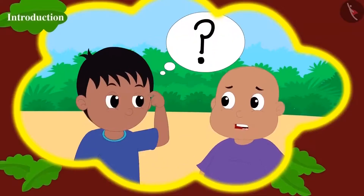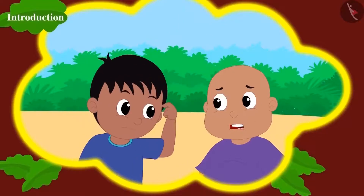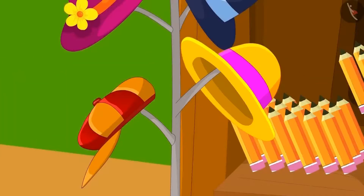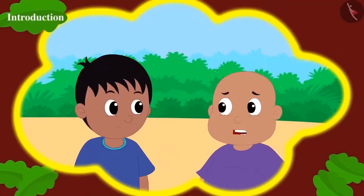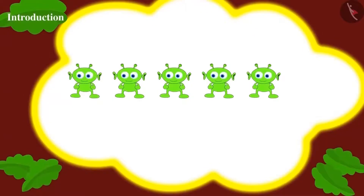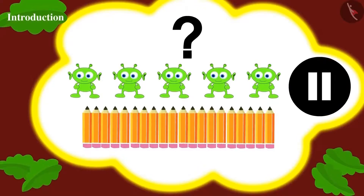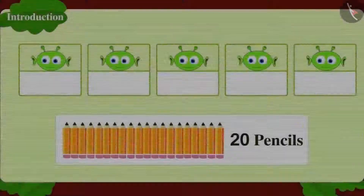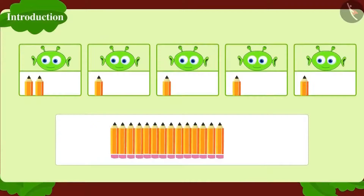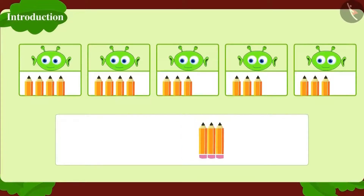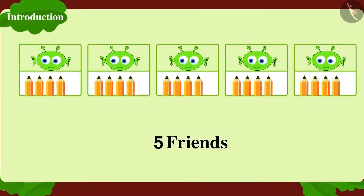Raju and Bablu are planning to buy pencils as gifts for Jeev's friends. They bought twenty pencils from Bunny's shop. Raju asks Bablu how to distribute these among five of Jeev's friends. Each friend will get four pencils. In division form: twenty pencils divided into five parts equals four pencils per part.